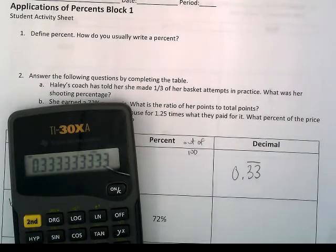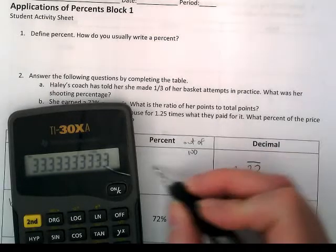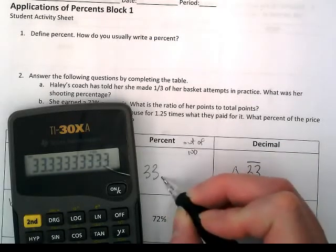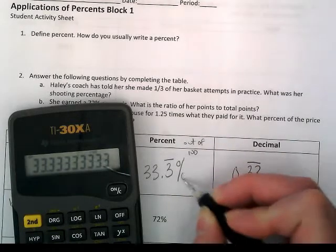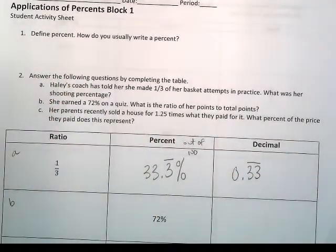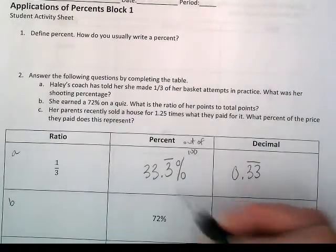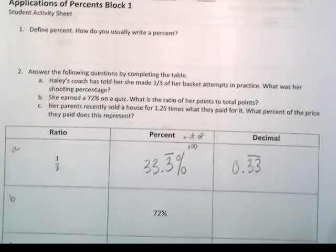So if I multiply this by 100, it's going to give me my percent, which is 33.3 repeating percent. If we were rounding this, it would just stay at 33.3, but this is the more precise number.